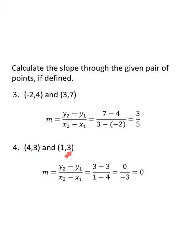Number four: points (4, 3) and (1, 3). To find the slope, subtract the y values: three minus three. Subtract the x values: one minus four. Three minus three is zero; one minus four is negative three. Zero over negative three is just zero — it's okay to have zero in the numerator, you just get zero. Zero in the denominator is bad, but zero in the numerator is fine. A slope of zero means this is a horizontal line.